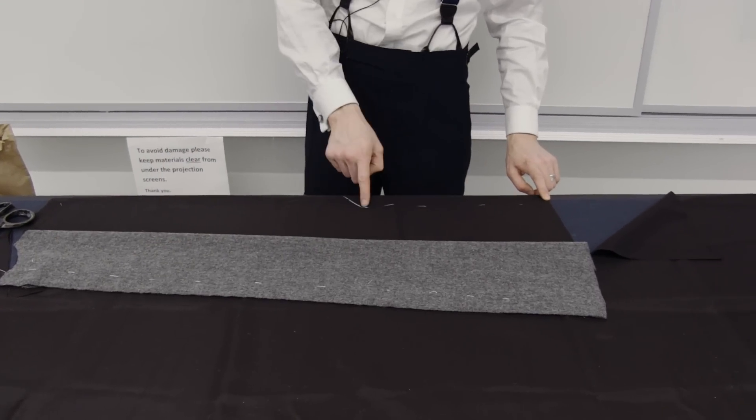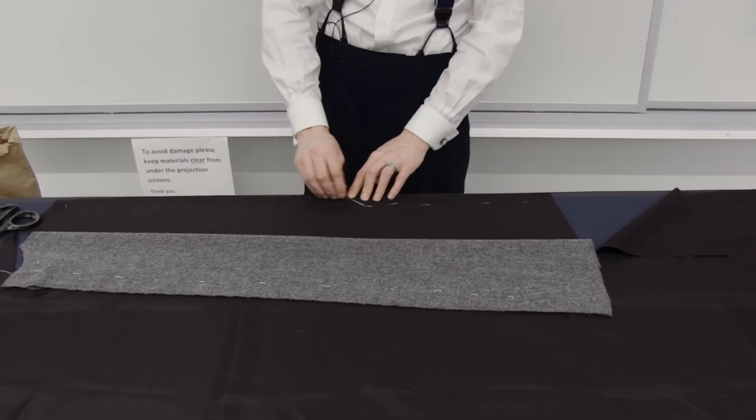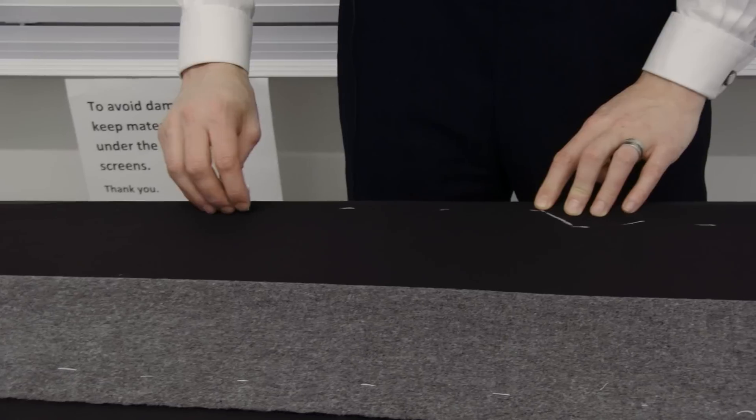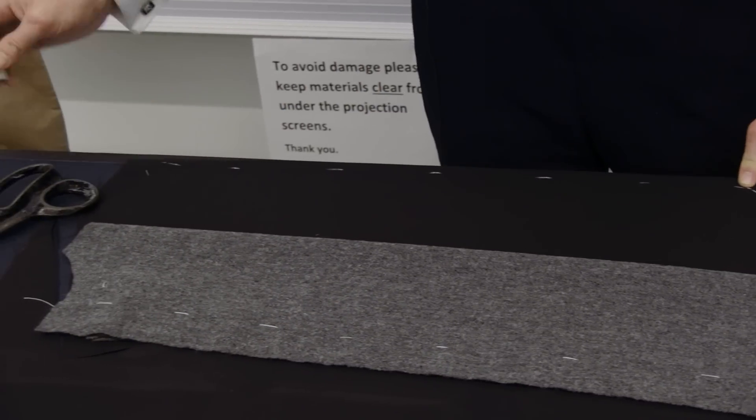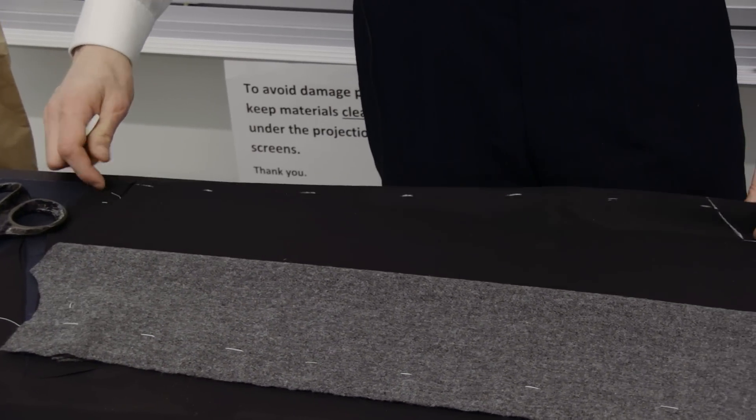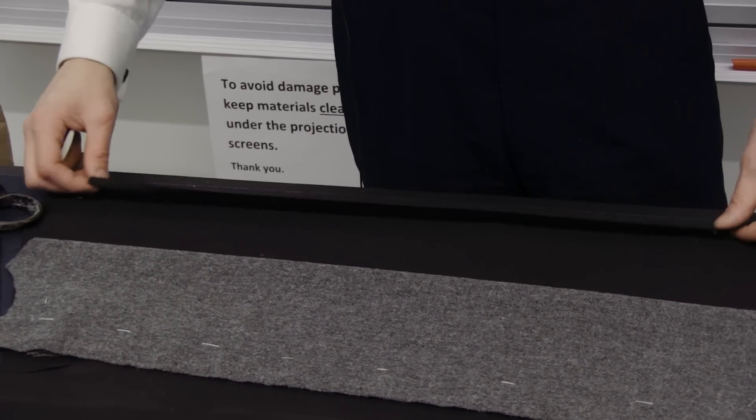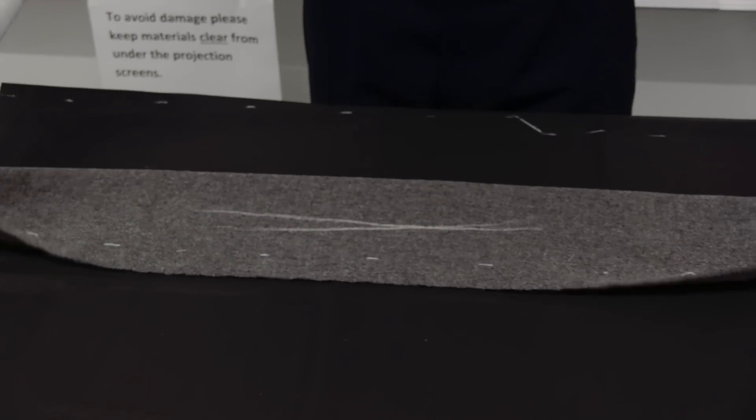We would machine it here, come out to this edge and machine it off like that all the way up to the top to allow for our plate right here. Mark an X on the wrong side.